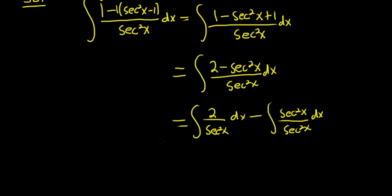This is starting to come together. Very good. So 2 over secant squared, you can think of it as 2 times 1 over secant squared. And that's 2 cosine squared,